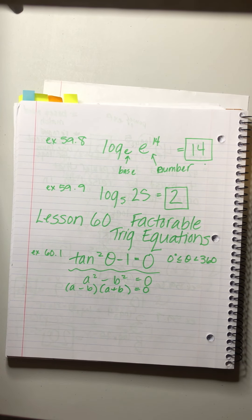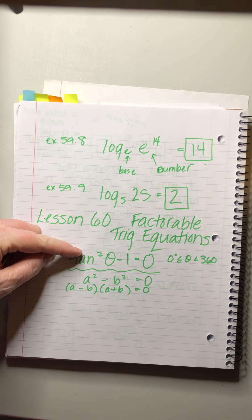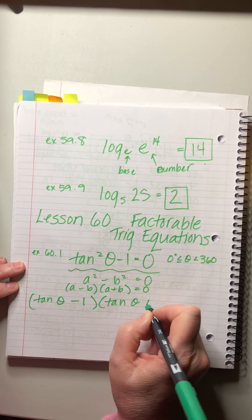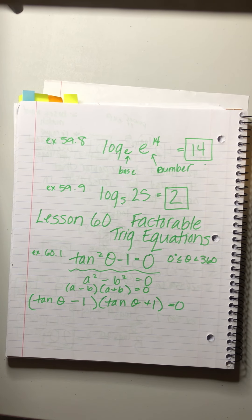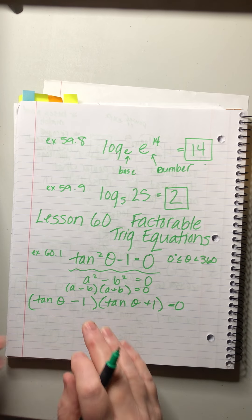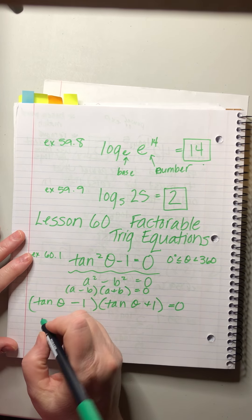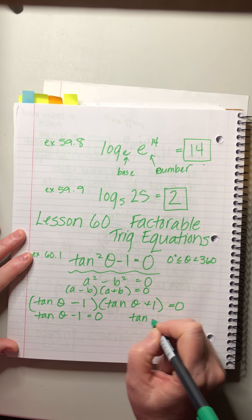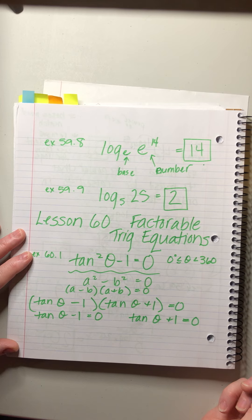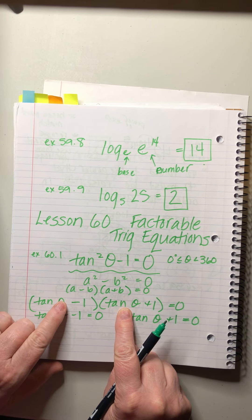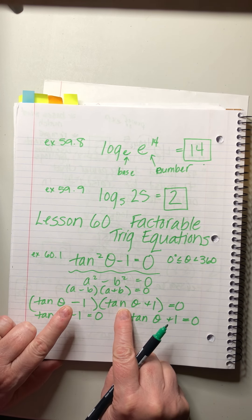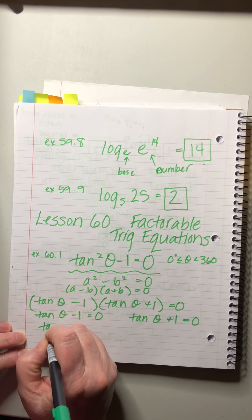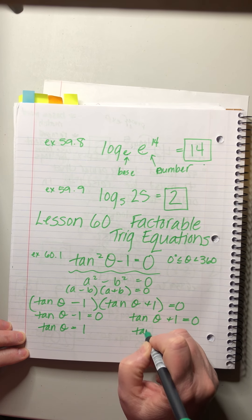We can do the same thing here — the square root gives us (tan θ - 1)(tan θ + 1) = 0. Using our zero factor theorem, tan θ - 1 = 0 or tan θ + 1 = 0. These are just old algebra rules applied to trig equations — if two factors multiply to give zero, either the first or the second equals zero.